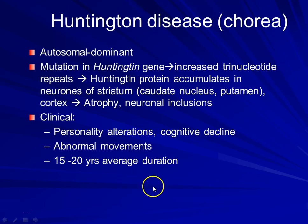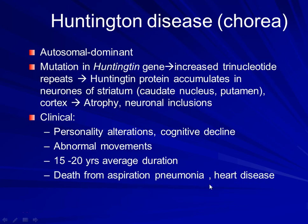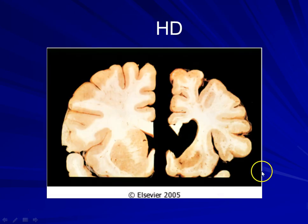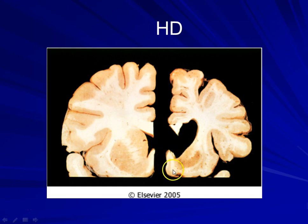The duration of the disease is about 15 to 20 years, so it is a progressive disease, and eventually these patients will also succumb from things like pneumonia and heart disease. This is a gross picture taken from Robbins — this is a normal section of the brain where you can see the basal ganglia. In the affected brain, the basal ganglia is markedly atrophied, and not only is the basal ganglia atrophied, you can also see that the cortex in this particular case is also markedly atrophied.